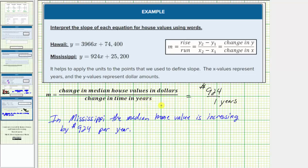And now let's interpret the slope for the equation involving Hawaii. The slope equals 3966. So we'll first write that as a fraction. Then include units. These would be dollars, and this would be time in years. This slope is telling us in Hawaii, the median home value is increasing by 3,966 dollars per year. Let's also write this as a sentence.